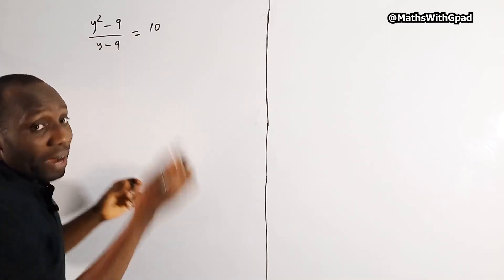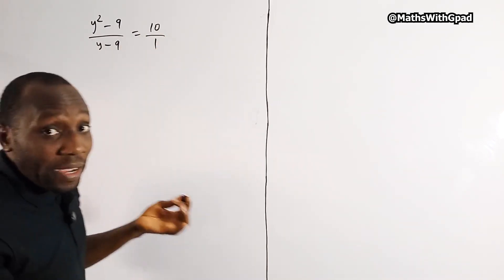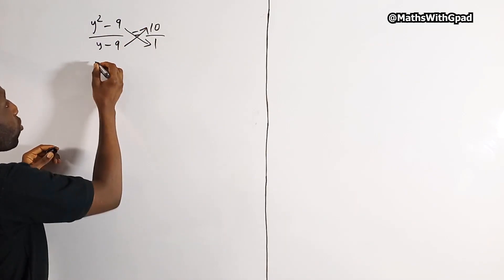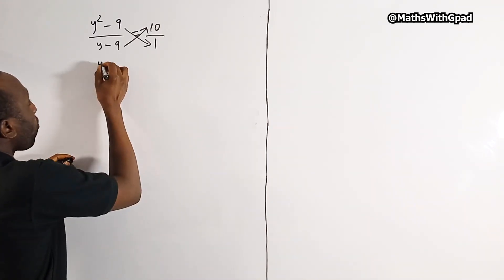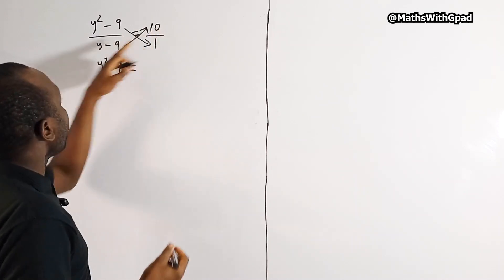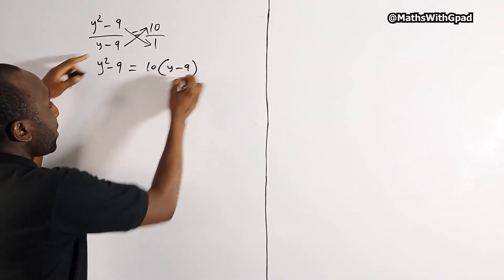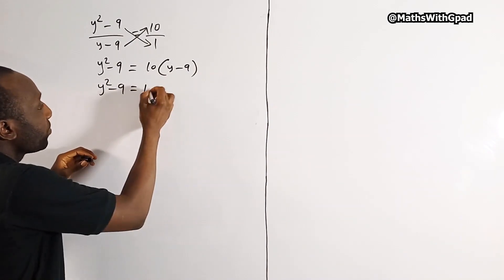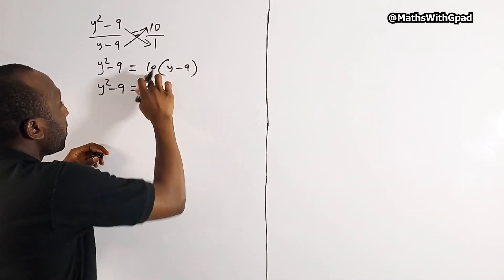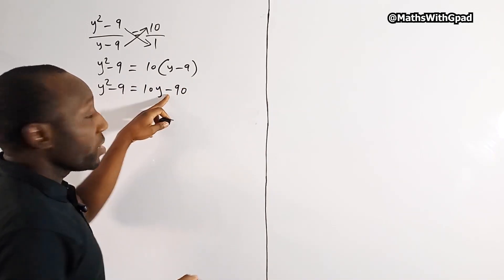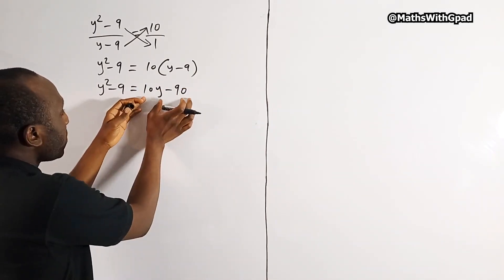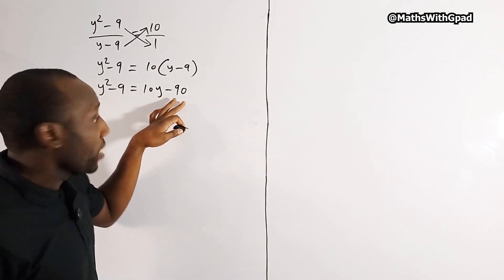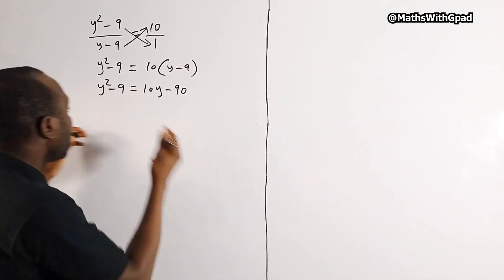We rewrite 10 as 10 over 1 — nothing has changed. So we cross multiply. Now we have 1 times y squared minus 9, which is also y squared minus 9, and this is equal to 10 times y minus 9. So we have y squared minus 9 equals 10y minus 90. Now let's move these two terms to the left-hand side: we take away 10y and add 90.